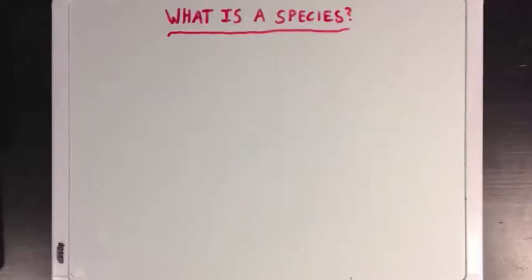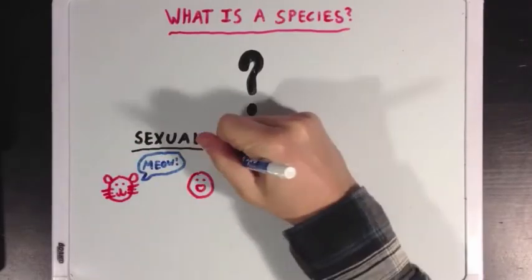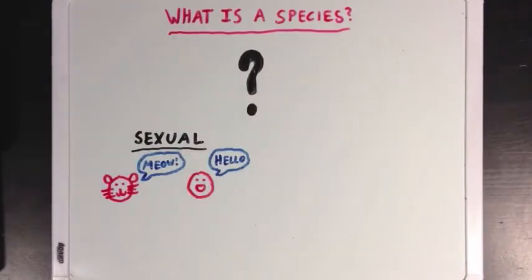What is a species? This can be a very difficult question to answer. For sexually reproducing organisms, we can say that two organisms, like this cat and this human, are members of different species if they are unable to have offspring together.